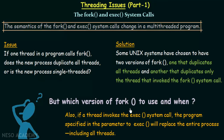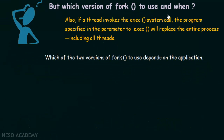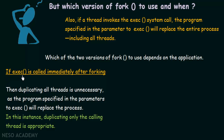Now let us determine which version of fork to use and when, by combining the uses of fork and exec. Which version to use depends on the application. The first case is if exec is called immediately after forking. In this case, duplicating all the threads is unnecessary, because the program specified in the parameter to exec will replace the process anyway. In this instance, duplicating only the calling thread is appropriate.